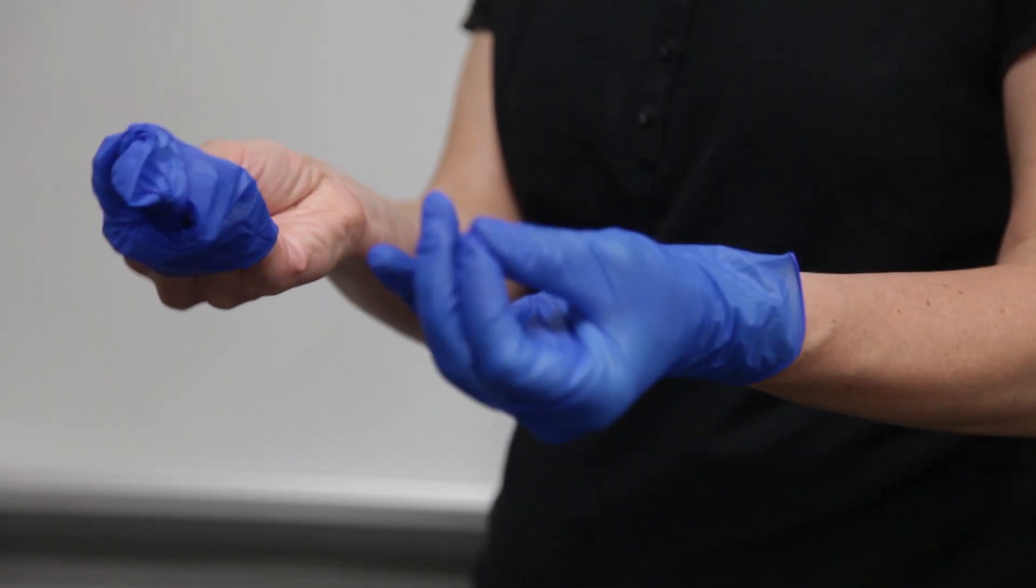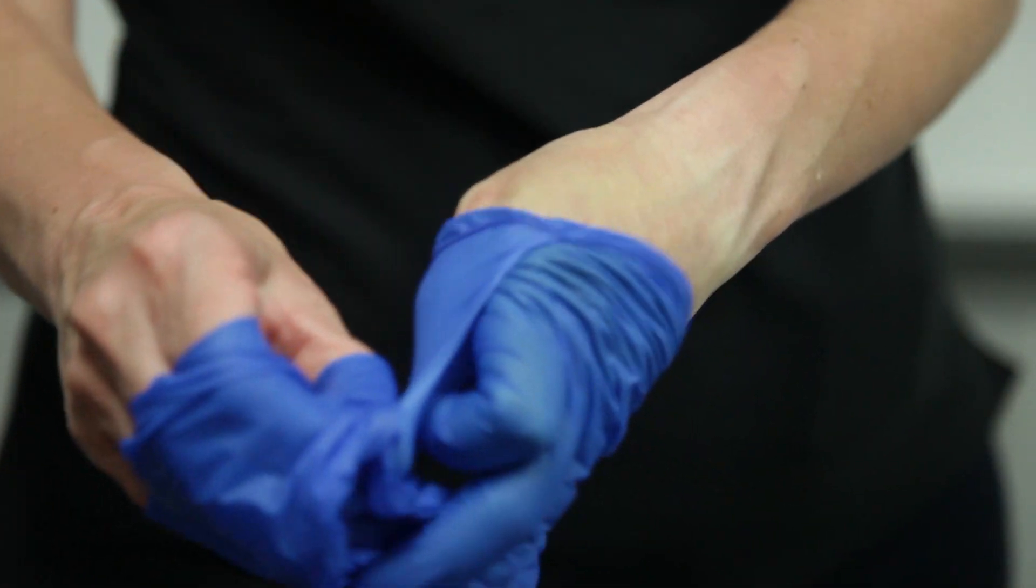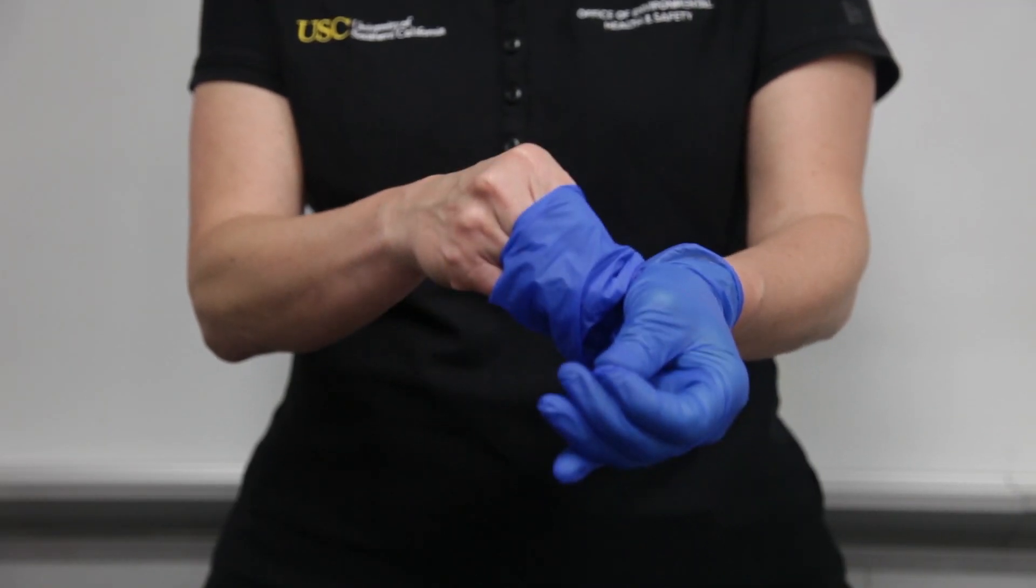When the first glove is half off, start removing the second glove using the clean interior of the first glove to peel back the cuff at the wrist.